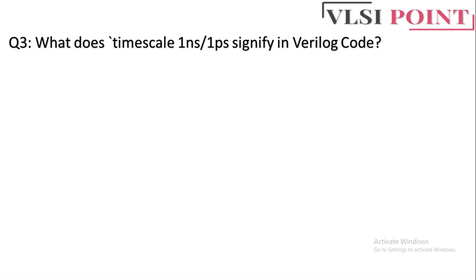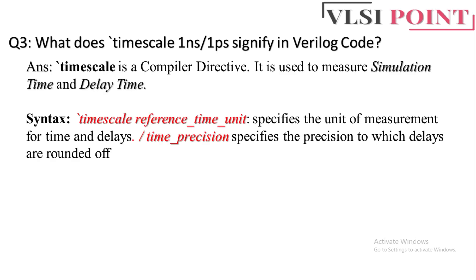Next question: what does `timescale 1ns/1ps signify in Verilog code? The `timescale directive is a compiler directive that specifies the time unit used in simulation. It is typically placed at the beginning of the Verilog file, with the syntax: `timescale time_unit / time_precision. Here, 1ns is the time unit and 1ps is the time precision.